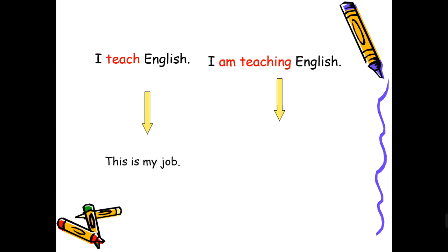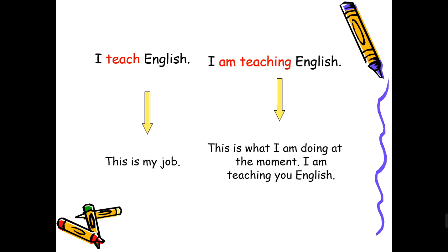Here we have a big difference between the two. The words seem to be the same, but there is a big difference. When I say 'I teach English,' this is my job and this is what I do — it's a permanent state. That's why we're using the present simple, because it's expressing something which is generally true. The second statement, 'I am teaching English,' is the present continuous, which expresses what I am doing at the moment — an action that's taking place at the time of speaking.